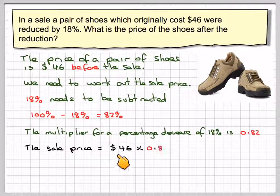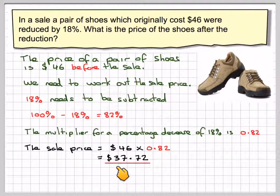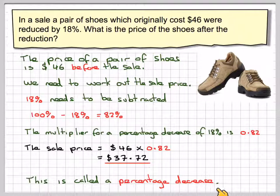The sale price is going to be $46 times 0.82, which gives me $37.72. This is called a percentage decrease.